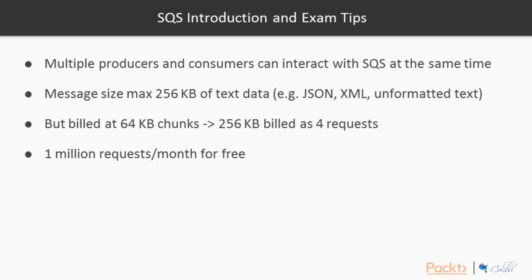Multiple producers and consumers can interact with SQS at the same time — multiple producers can send messages to your SQS queue while multiple consumers simultaneously read and delete them. The maximum message size is 256 kilobytes of text data, which can be in JSON, XML, or formatted text. You are billed in 64-kilobyte chunks for legacy reasons. For a 256-kilobyte message, you will be billed as four separate requests. You receive one million requests per month for free, even after the free tier expires.